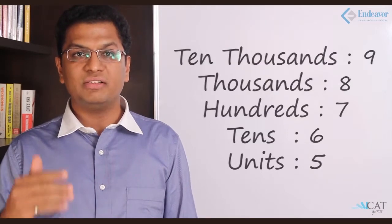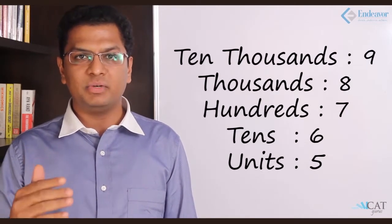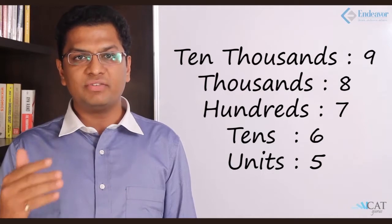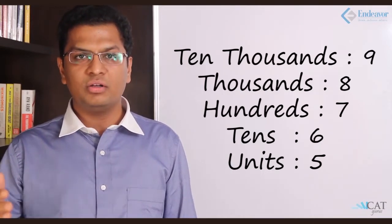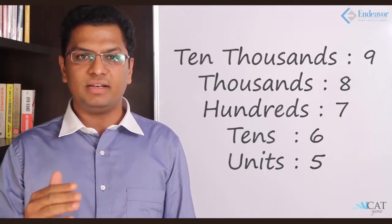Now let's look at the face value. What is the face value of the number at the hundreds place which is 7? What is the face value of a number which has a thousand place which is 8 and so on? This is how we get the place value and the face value.